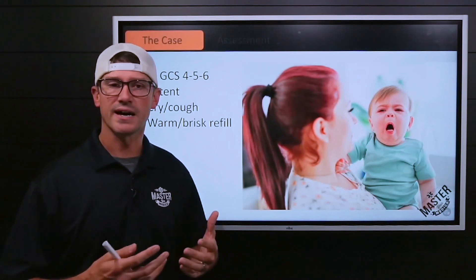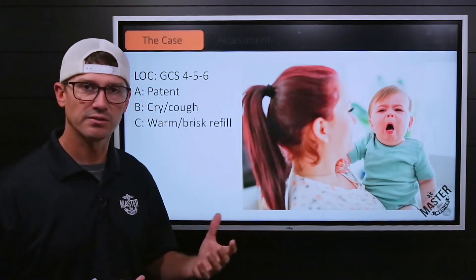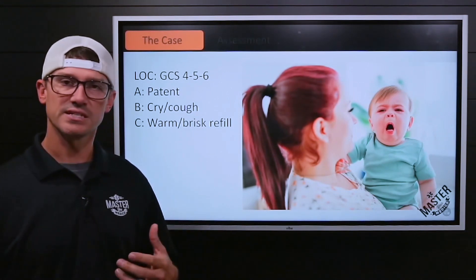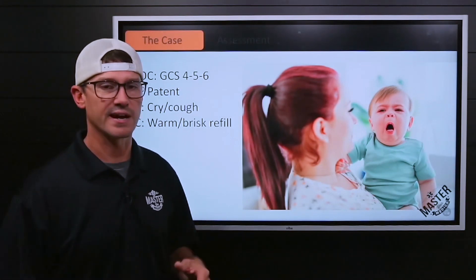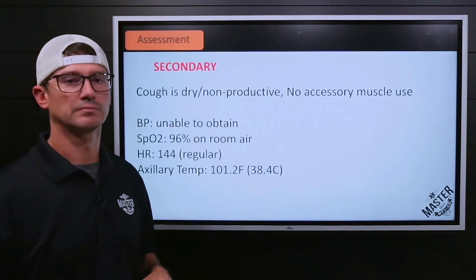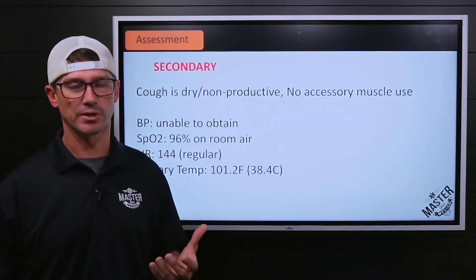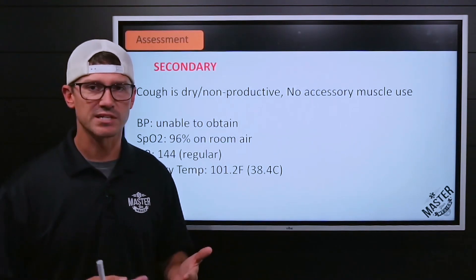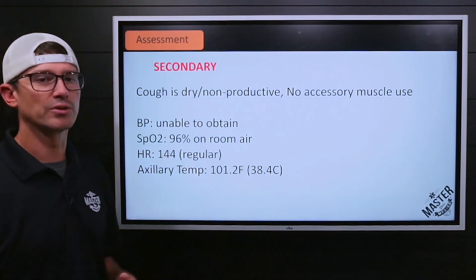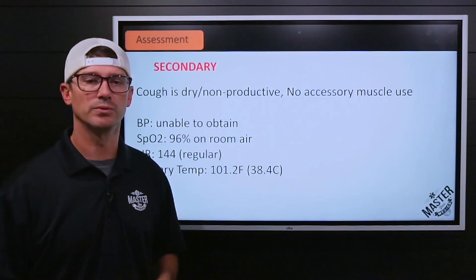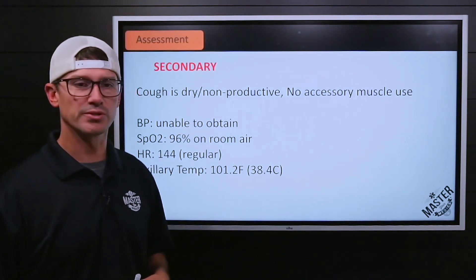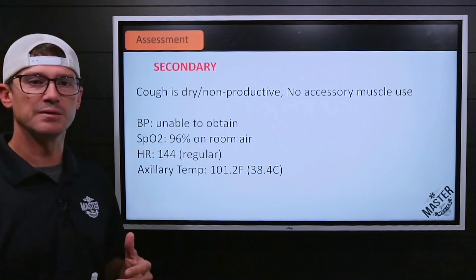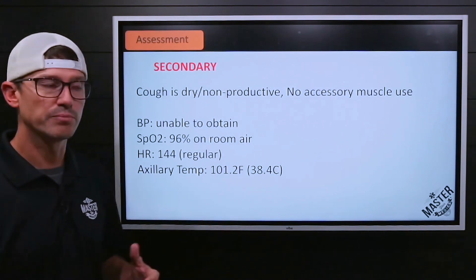The kid seems to be alert and oriented, as appropriate for the age. Airway is patent, breathing is adequate — just a constant dry cough and crying. The skin is warm with a brisk capillary refill. The cough is dry and non-productive. You don't notice any accessory muscle use, there's no cyanosis, and you're not really seeing any significant respiratory distress. You're unable to get a blood pressure due to the child not wanting to comply. Pulse oximetry is 96% on room air. Heart rate is 144 and regular, and you get an axillary temp of 101.2°F or 38.4°C.